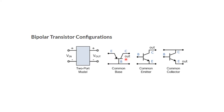For the output characteristics of common base it is IC versus VCB. Similarly, for common emitter, the input characteristics are IB versus VBE, and the output characteristics are IC versus VCE. For common collector, the input characteristics are IB versus VBC, and the output characteristics are IE versus VCE. Please remember these — they will be very helpful in today's lab.